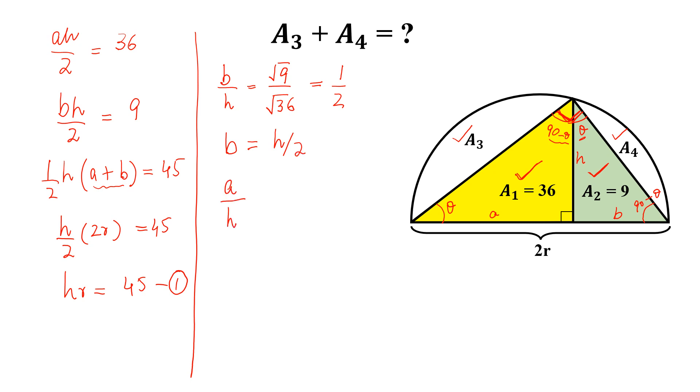Similarly we can write a by h equal to square root of 36 divided by square root of 9, and this is equal to 2. So from here we get a equal to 2h. Adding this and this, so a plus b is 2r, and 2h plus h by 2 is equal to 5h by 2. And from here we get h equal to 4r by 5.